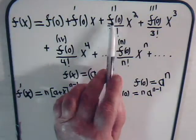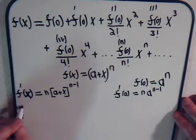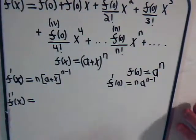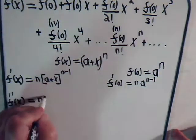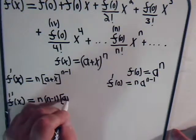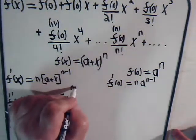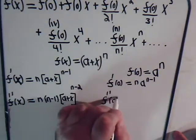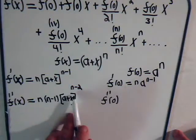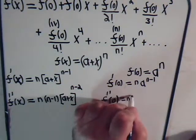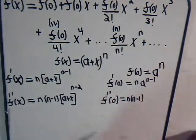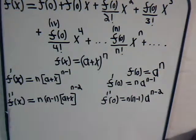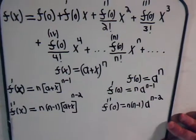Taking the second derivative, f double prime of x equals n times n minus one times a plus x to the n minus two power. Evaluating at x equals zero gives f double prime of zero equals n times n minus one times a to the n minus two.